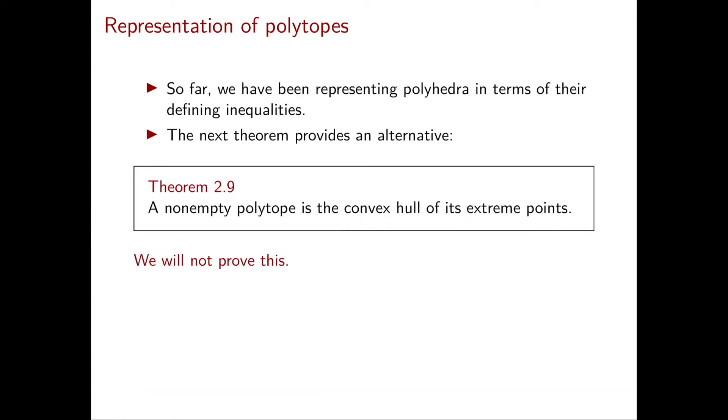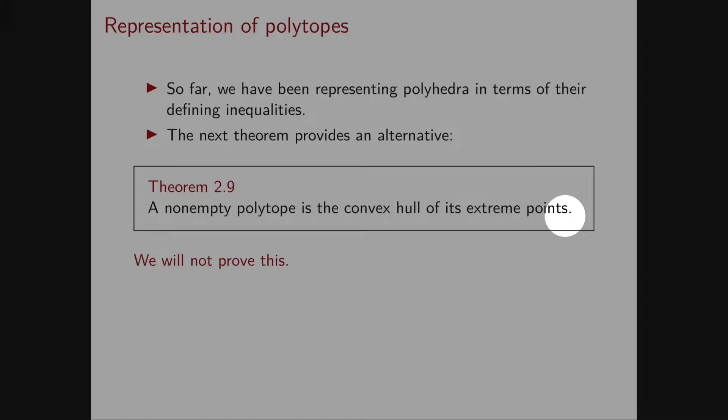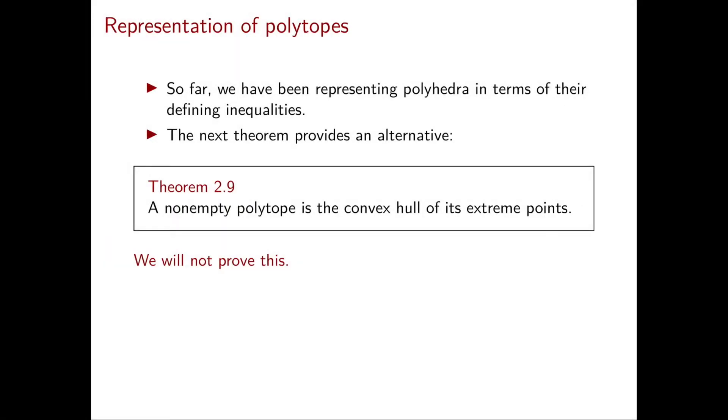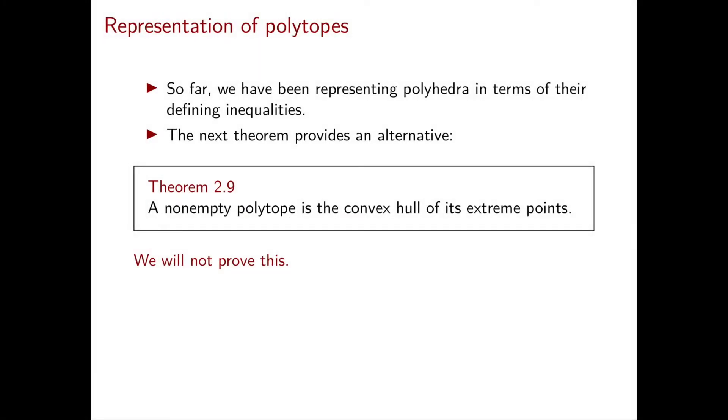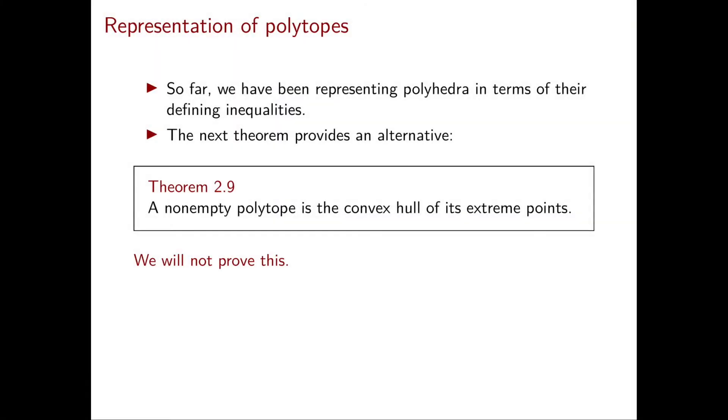So far we have been thinking about polyhedra as the intersection of finitely many half spaces. In the next theorem we see that they can also be described in terms of convex hulls: a nonempty polytope is the convex hull of its extreme points. We're considering polytopes, so bounded polyhedra, and of course we need non-emptiness. We will not prove this theorem.